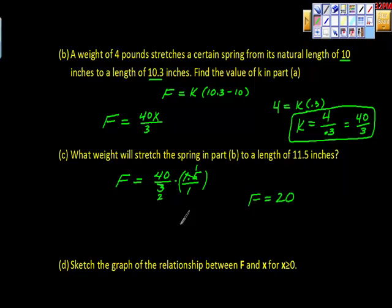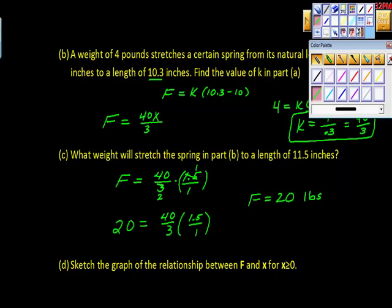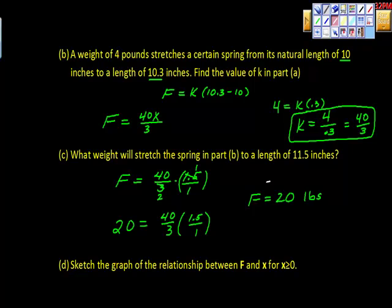We could test this backwards and say that 20 is equal to 40 thirds times 1.5, and it is, so that does work. So F is 20 pounds. As you can tell, I did not do this problem in advance, so I'm looking, golly, did I do that right? But I think I did. I think we're all right.